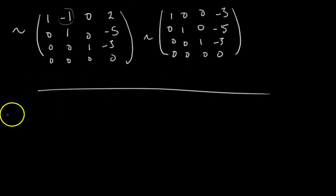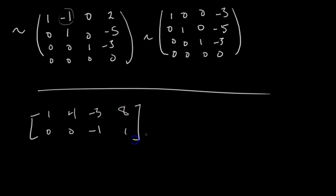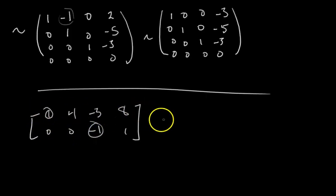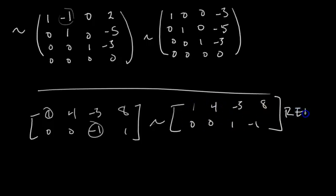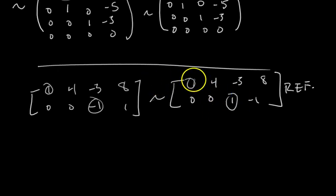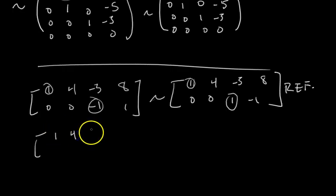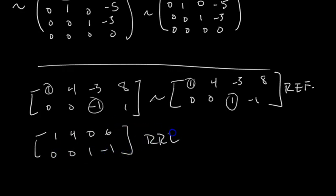Let's do another example — this one's a little shorter and easier. The matrix is: 1, 4, negative 3, 8 / 0, 0, negative 1, 1. The first pivot is already a 1, and there's nothing below it to eliminate. We move to the next pivot, which is negative 1 — we turn that into a 1 by scaling the second row by negative 1, giving us 0, 0, 1, negative 1. We're already in row echelon form. Then the last step is getting zeros above our pivots: row 1 = row 1 plus 3 times row 2. We get 1, 4, 0, and 8 plus 3 times negative 1 is 5... wait, 8 plus 2 times negative 1 is 6. Done — this is reduced row echelon form.